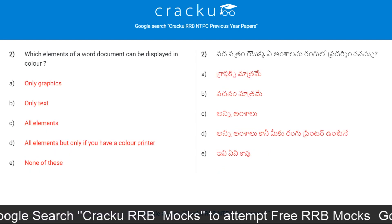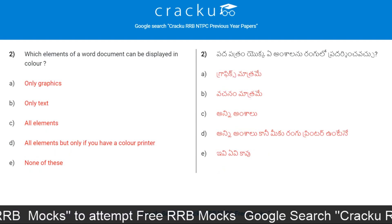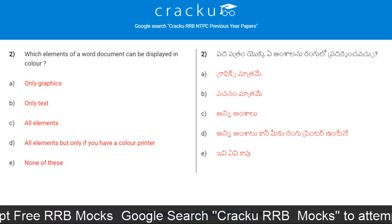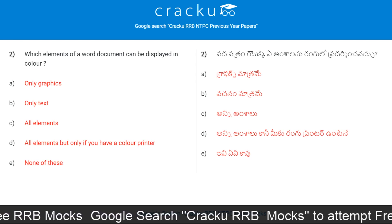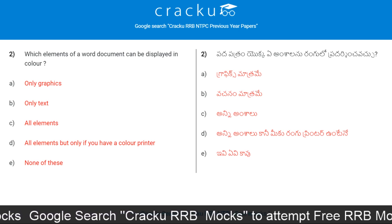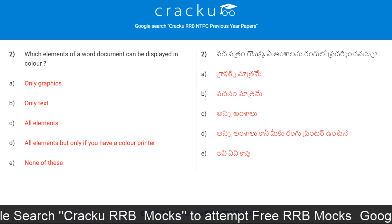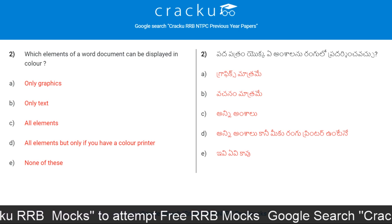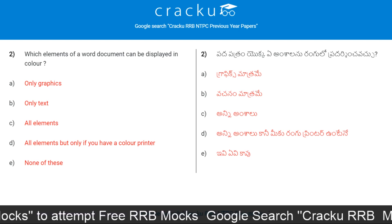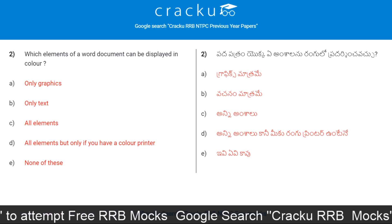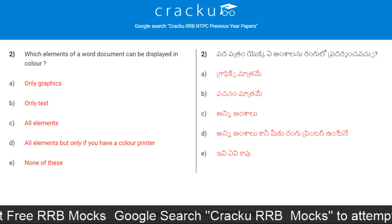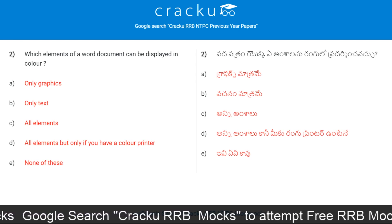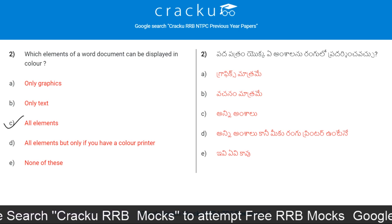Next question. Which elements of a word document can be displayed in color? Only graphics, only text, all elements, all elements but only if you have a color printer, or none of these. The correct answer is Option C, All Elements.